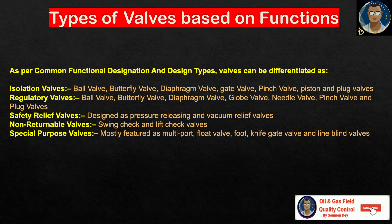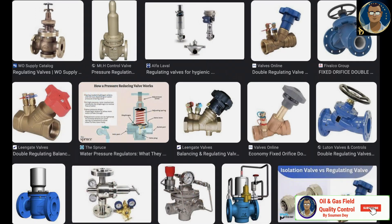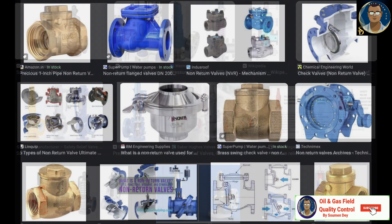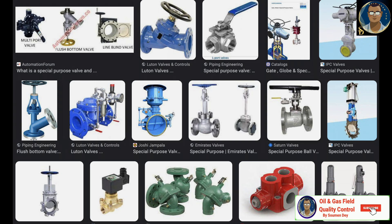Types of valve based on their functions. Valves can be differentiated as isolation valves, regulatory valves, safety relief valves, non-returnable valves and special purpose valves. Isolation valve examples include ball, butterfly, diaphragm, gate, pinch, piston and plug valves. Regulatory valves include ball, butterfly, diaphragm, globe, needle, pinch and plug valves. Safety relief valves are designed as pressure releasing and vacuum relief valves. Non-returnable valves include swing check and lift check valves. Special purpose valves include multiport, float, foot, knife gate and line blind valves.